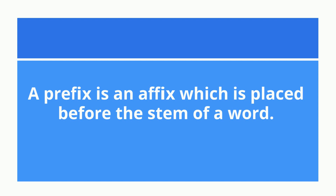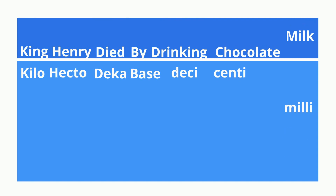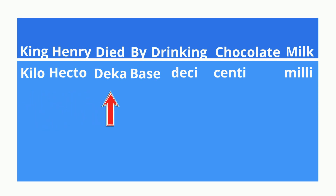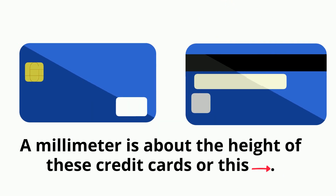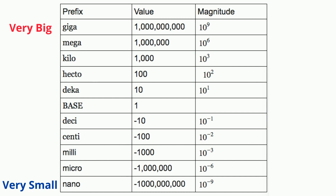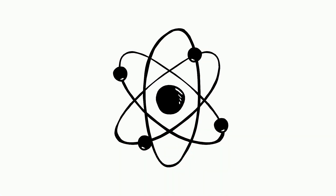Next, you combine the units with prefixes. Many of you have heard 'King Henry died by drinking chocolate milk.' This is used to remember the prefixes: kilo, hecto, deca, base, desi, centi, and milli. For example, if I am measuring distance, the kilometer can be used for larger measurements like the distance across the state of Georgia, or a millimeter can be used for smaller measurements because it is about the height of a credit card. However, there are even bigger and smaller prefixes. Most of them are rarely used, but the beauty is that you can take almost anything in the universe and there will be a prefix that can measure it.